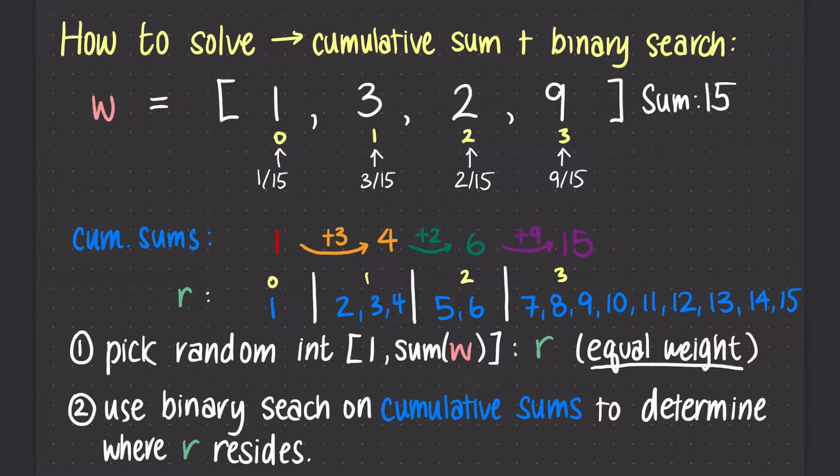Instead of representing each index's probability of being picked as a fraction, we represent the same value using a range of cumulative sums. A cumulative sum is the value of every single w value added from index 0 until the current index inclusive.